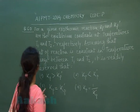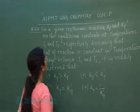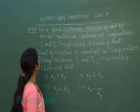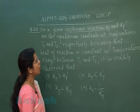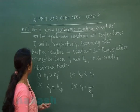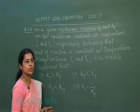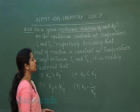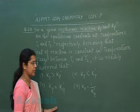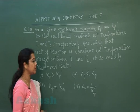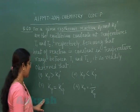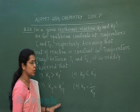Students, our next question is question number 60. For a given exothermic reaction, Kp and Kp' are the equilibrium constants at temperatures T1 and T2 respectively. Assuming that heat of reaction is constant in the temperature range between T1 and T2, it is readily observed that: first option, Kp is greater than Kp'; second option, Kp is less than Kp'; third option, Kp is equal to Kp'.